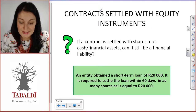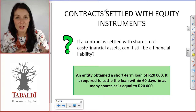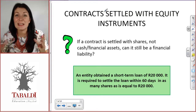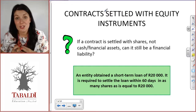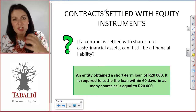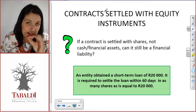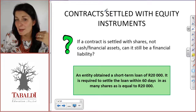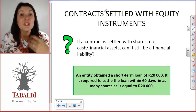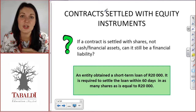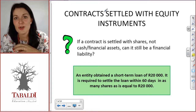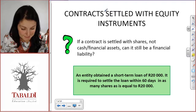The second issue is contracts settled with equity instruments. You have a contract you have to settle somehow, but you're not going to give cash — you're going to give equity, so you're going to pay in shares. The question is: is this an equity instrument or a financial liability? You might be tempted to say it must be an equity instrument because you're settling in shares, but the standard says no. The fact that you're settling in shares does not mean the contract is an equity instrument.